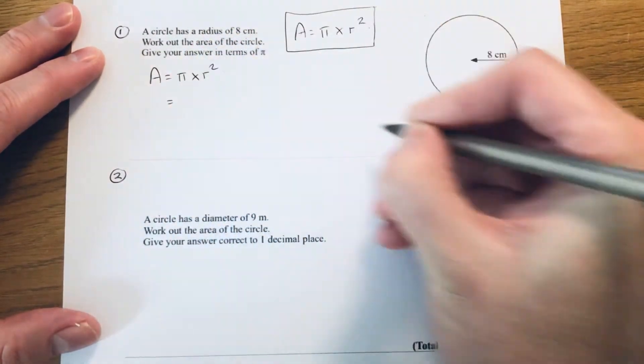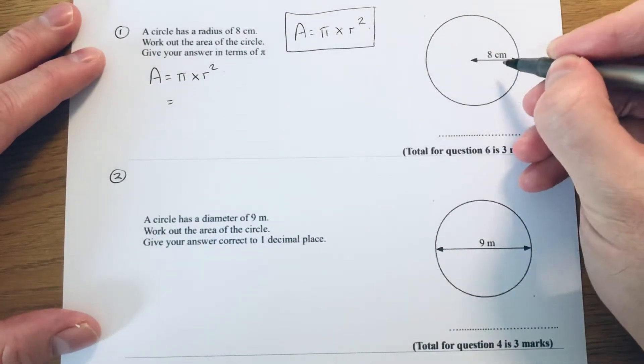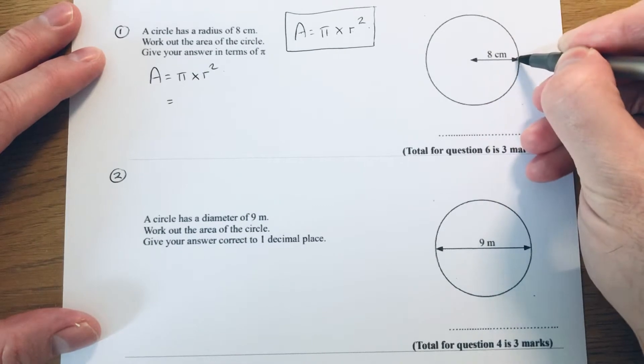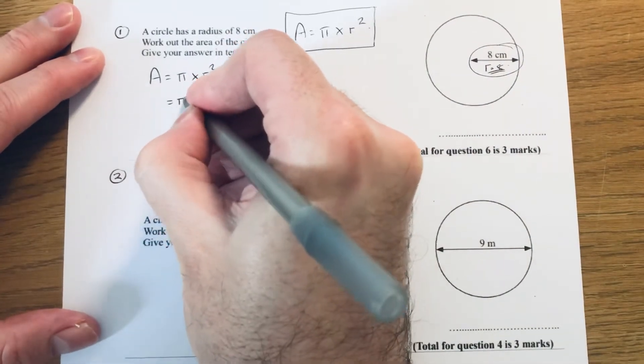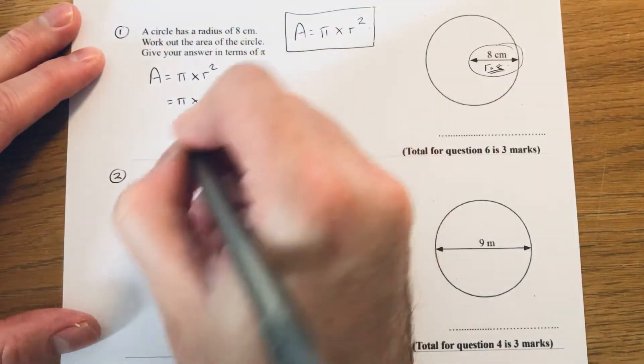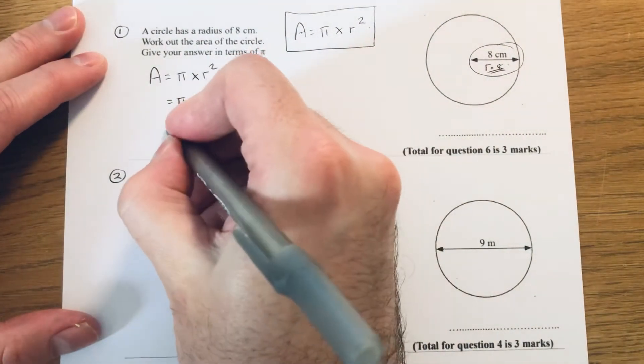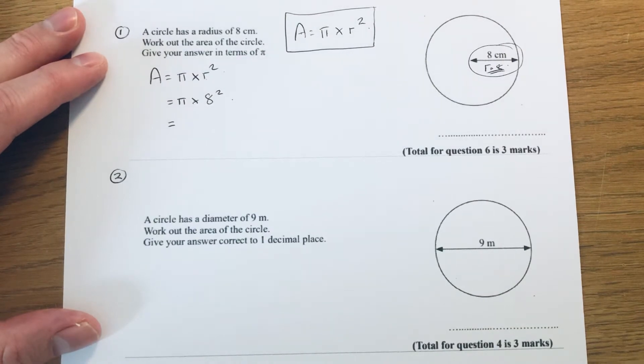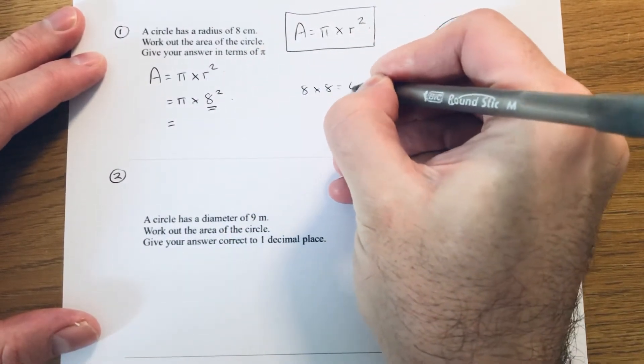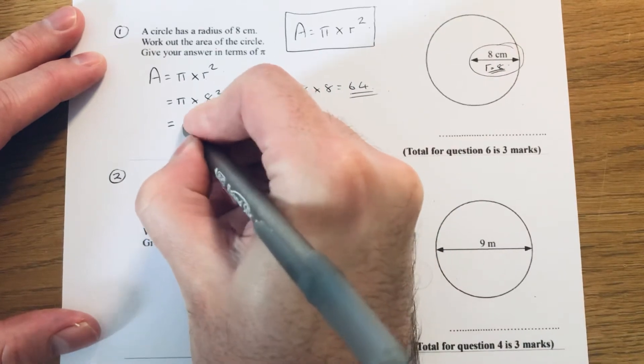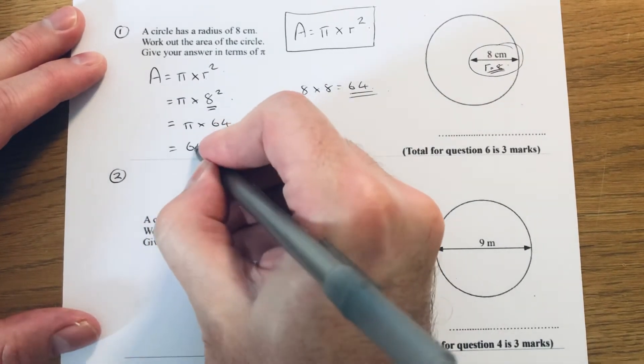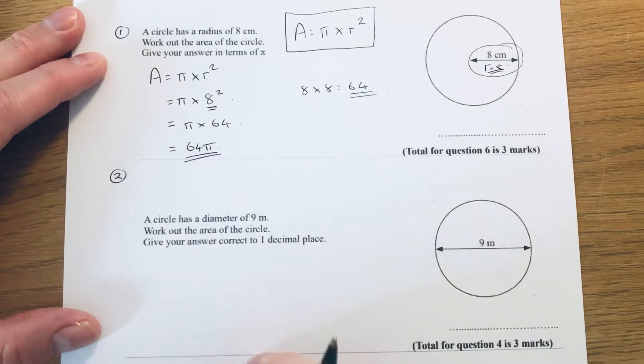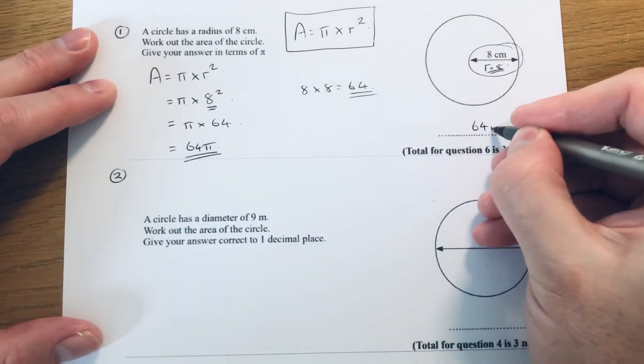All you need to do is substitute the radius into the formula. The radius is the distance halfway across your circle. So that number there is our radius, so we just put that into our formula here. So it'd be pi times 8 squared. This looks like a non-calculator question because it says give the answer in terms of pi. So 8 squared is 8 times 8, which is 64, so we get pi times 64. You can write that down as 64 and then just put the pi straight after it. So that is your final answer.